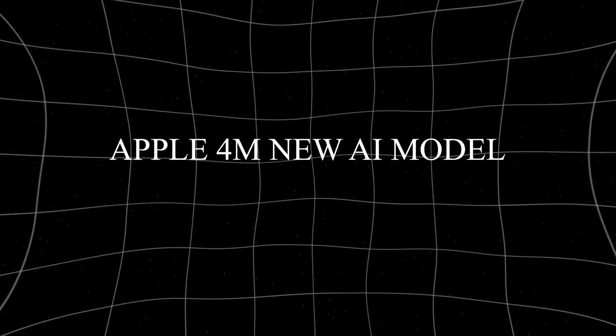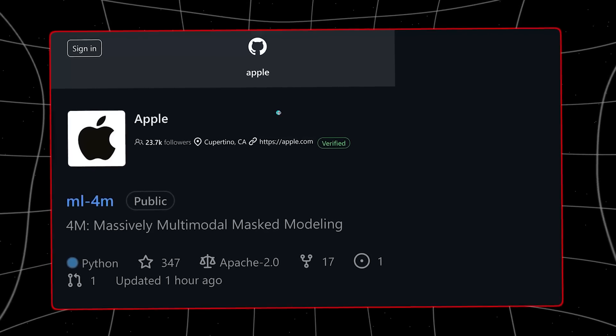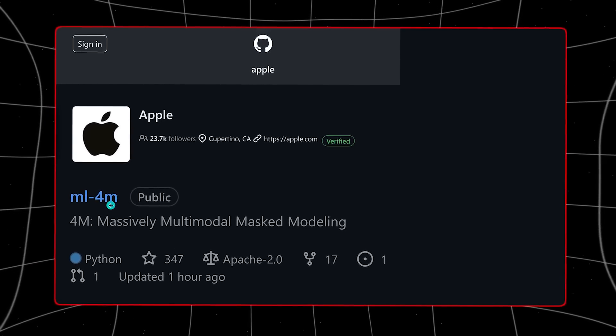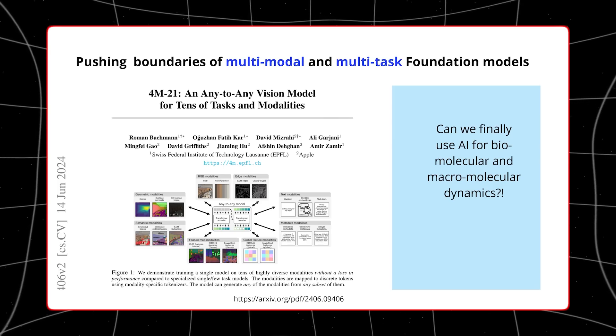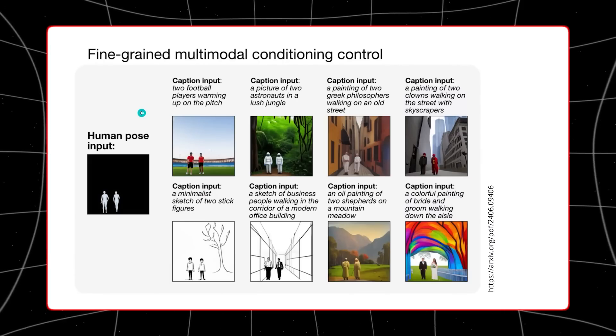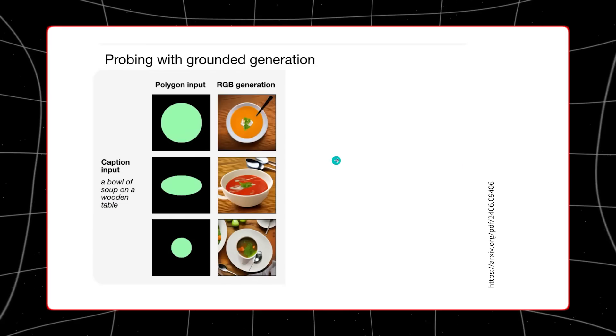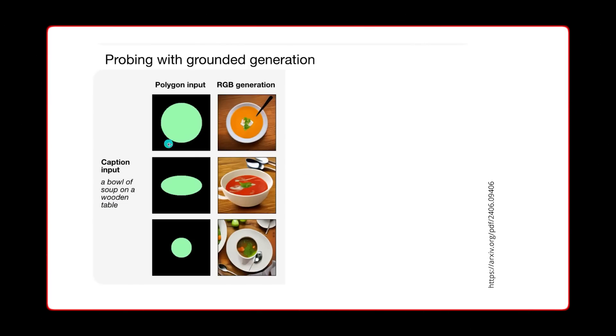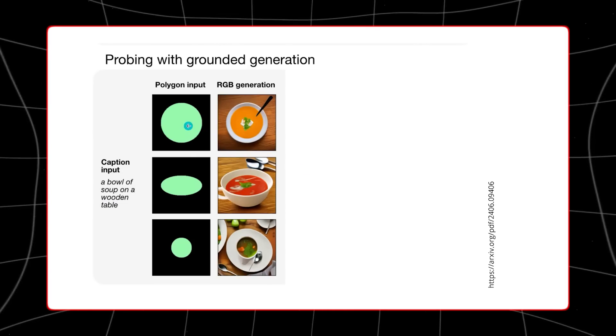Apple 4M New AI Model. The Apple 4M AI model is multimodal in nature, which means that it can understand and produce outputs in different forms, such as text, images, and even 3D scenes.